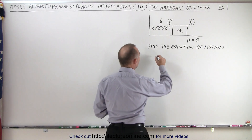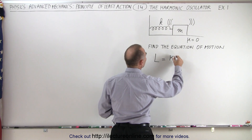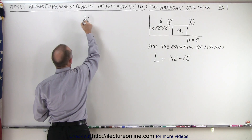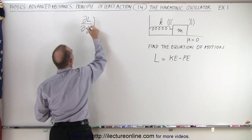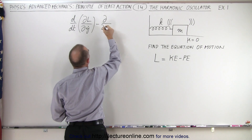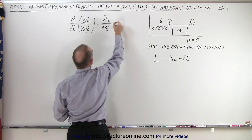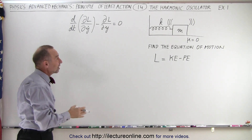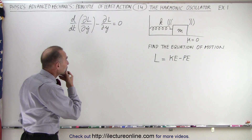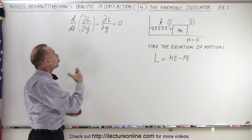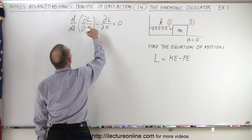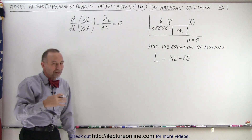In order to do that, we're going to use the principle that the Lagrangian is equal to the kinetic energy minus the potential energy. Then we use the Euler-Lagrange equation: take the partial derivative of the Lagrangian with respect to velocity, take the derivative of that with respect to time, subtract the partial derivative with respect to position, and set it equal to zero. We can use x's instead of y's — they're simply units of choice — so we call the coordinate x and the velocity x dot.